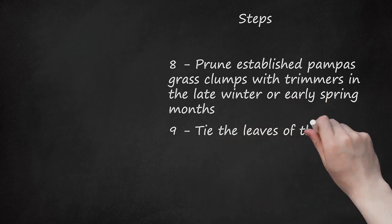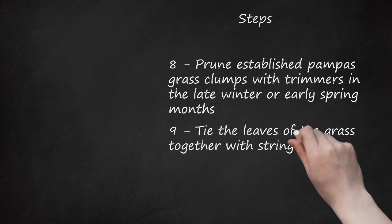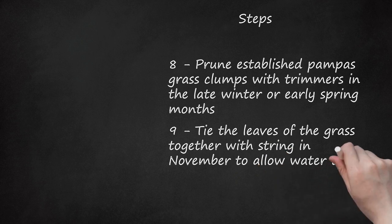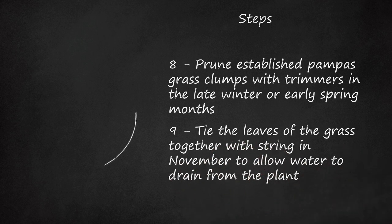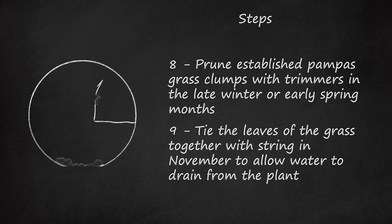9. Tie the leaves of the grass together with string in November to allow water to drain from the plant. This will prevent shock during the cold months. The plant can also be covered with a fleece wrap.